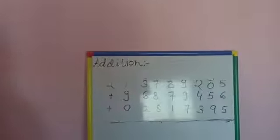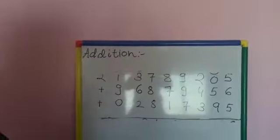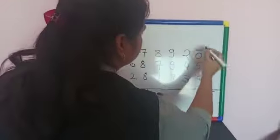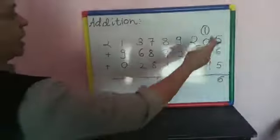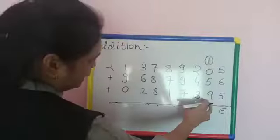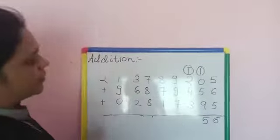How to do addition? It's the same. 5 plus 6 is 11. Then 11 plus 5, how many? 16. 6 is here, 1 is carry over. Now, 1 plus 5 is 6. 6 plus 9 is 15. Then 5 is here, 1 is carry over.